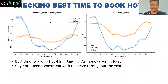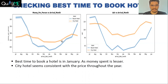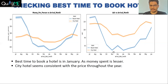To find the best time to book the hotel, we look at money spent per person versus arrival month. For resort hotel it is very low in January. For city hotel it stays relatively constant throughout the year, but is comparatively lower in January, December, November, February, and March. The average daily rate also drops in November, January, February, and March. So January is the best month for customers to book the hotel.